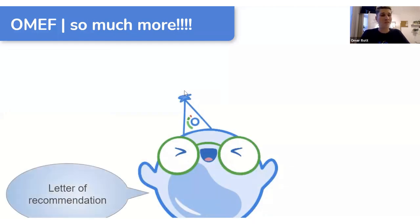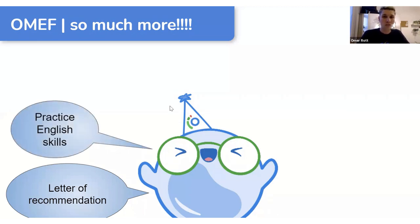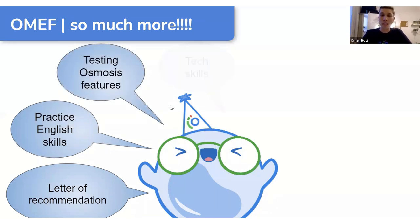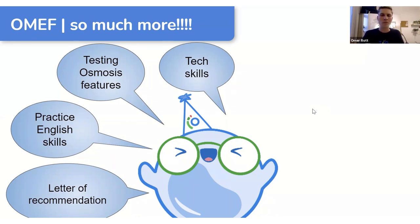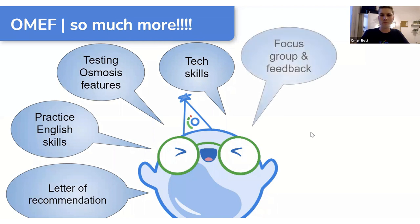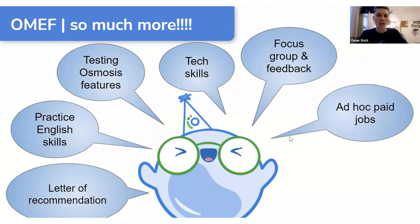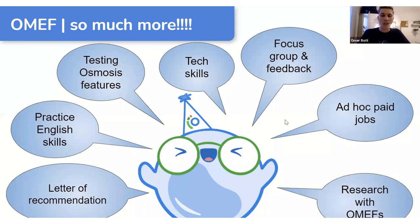There are many more things we don't have time to cover. After two semesters in the OMF program you can get a letter of recommendation. You can practice your English skills, test Osmosis features and give feedback, and learn tech skills — I became a Zoom master. We learn Canva for making cool posters and Slack for collaboration. There are sometimes special ad hoc paid jobs for some nice pocket money. You can also do research with fellow OMFs if you have a research idea and want to find collaborators.